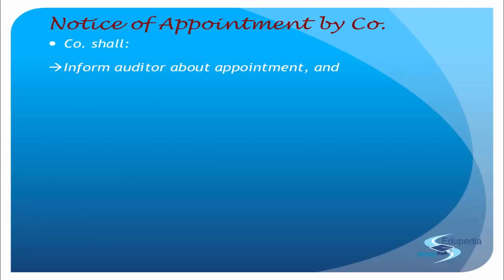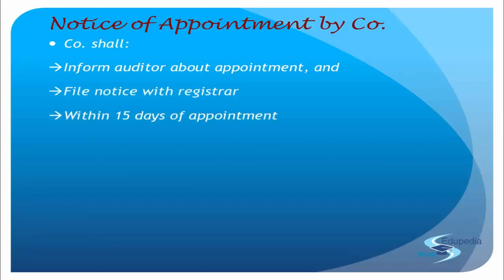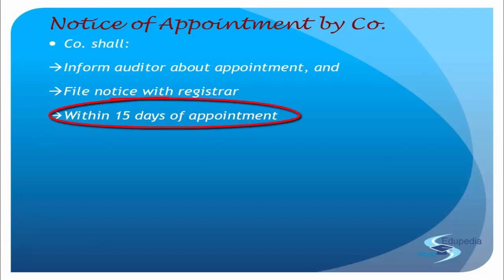After the auditor has been intimated, the company will have to file a notice of the appointment — whether of the firm or the auditor — with the Registrar in Form ADT-1. This will be done within 15 days of the meeting in which the auditor is appointed. So the process is: decide on the auditor, the auditor gives consent and a certificate, then a notice of appointment is sent, and after that, within 15 days, a notice is filed with the Registrar in Form ADT-1.